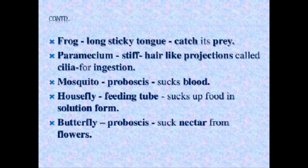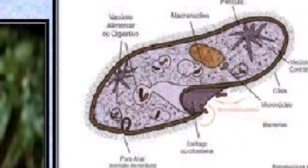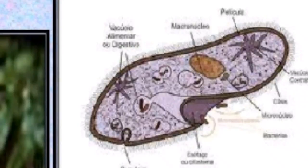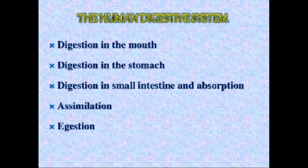Housefly has a feeding tube and sucks food in solution form. Butterfly takes nectar from flowers — the sweet liquid inside flowers is called nectar. In the diagram, you can see paramecium with hair-like projections, which are cilia, through which it takes in food.